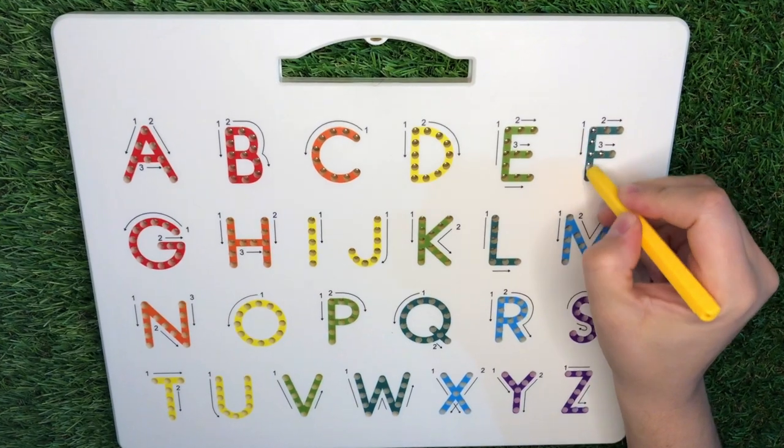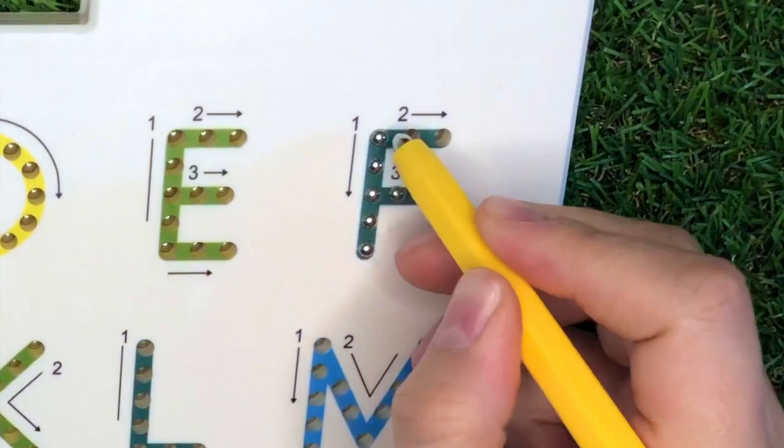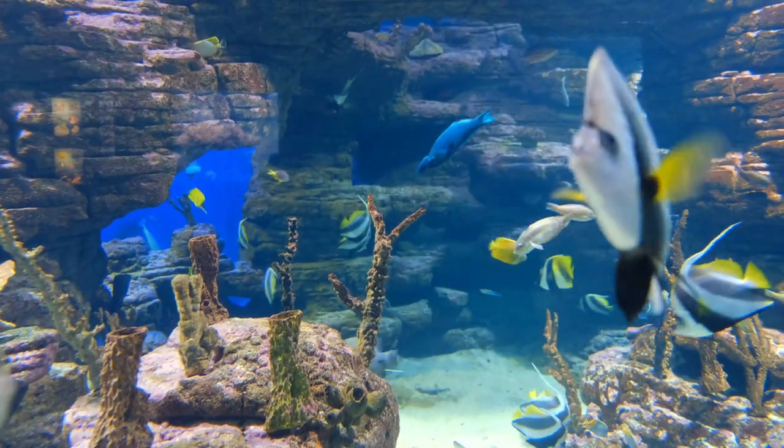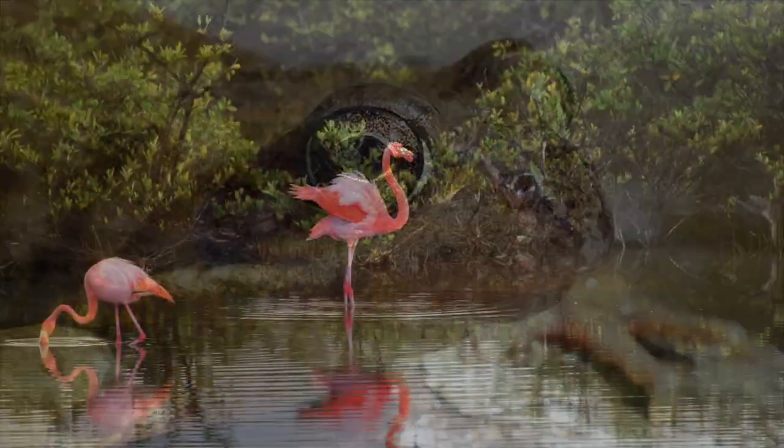Letter F. Pull down, across the top, and across the middle. F is for fish, frog, and flamingo.